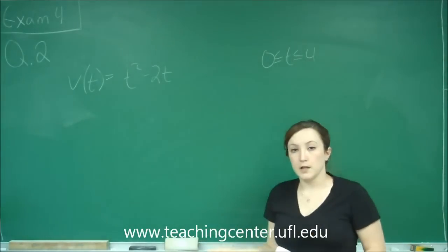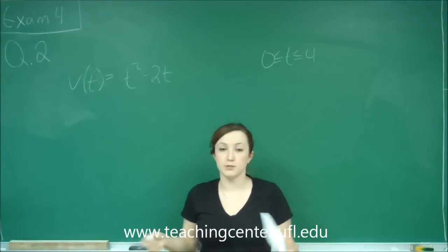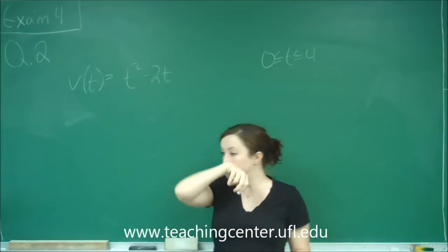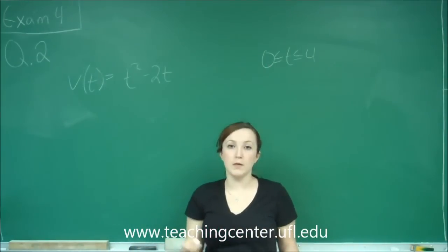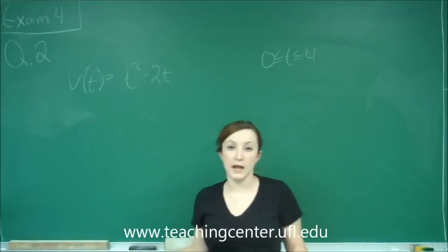So knowing that this is our velocity and we want to find the total distance, it should be a clue that we should set our velocity equal to 0 and find where it's stopping. Because for these problems, oftentimes we're going to go a certain amount of time in one direction and then maybe go back.